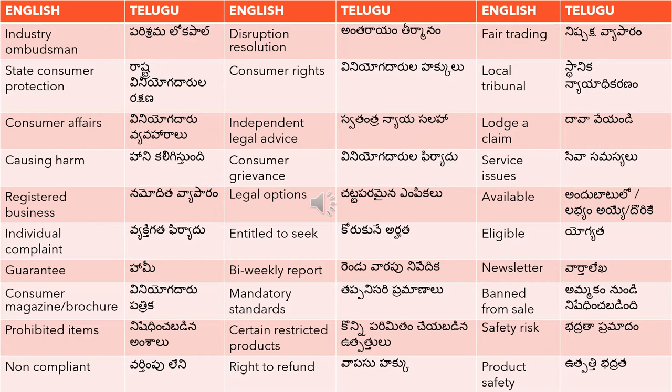'Registered business' would be 'namodita vyaparo'. 'Legal options' means 'satta paramayena mmpkalu' — 'satta paramayena' means legal or lawful, and 'mmpkalu' means options or choices.